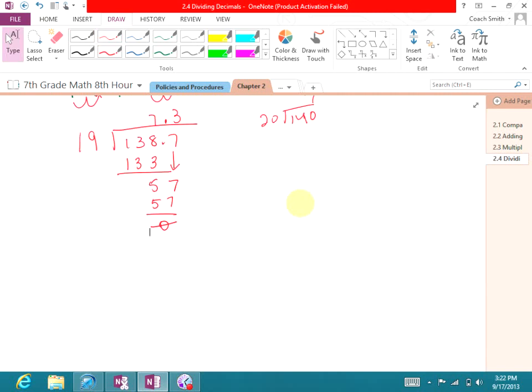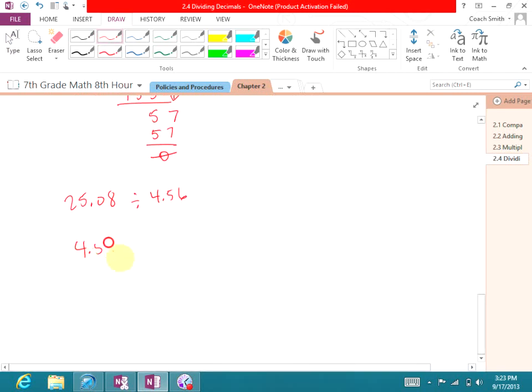Now, if we look at number 22, 25.08 divided by 4.56. 4.56 into 25.08. We have to move the decimal two places out here, so we have to do the same thing on the inside. So, that gives me 456 into 2508. Now, 456 doesn't go into 2. It doesn't go into 25. It doesn't go into 250. It goes into 508. So, I've got to figure out how many times 456 goes into 2508.